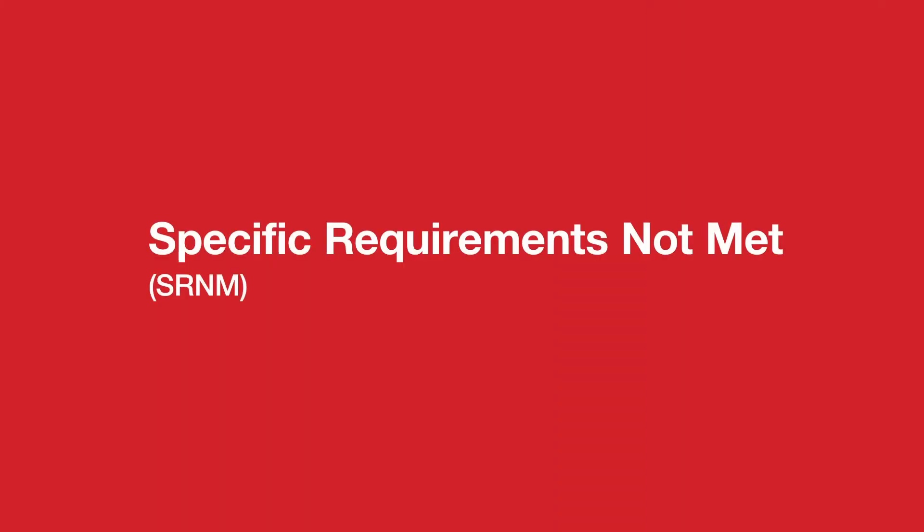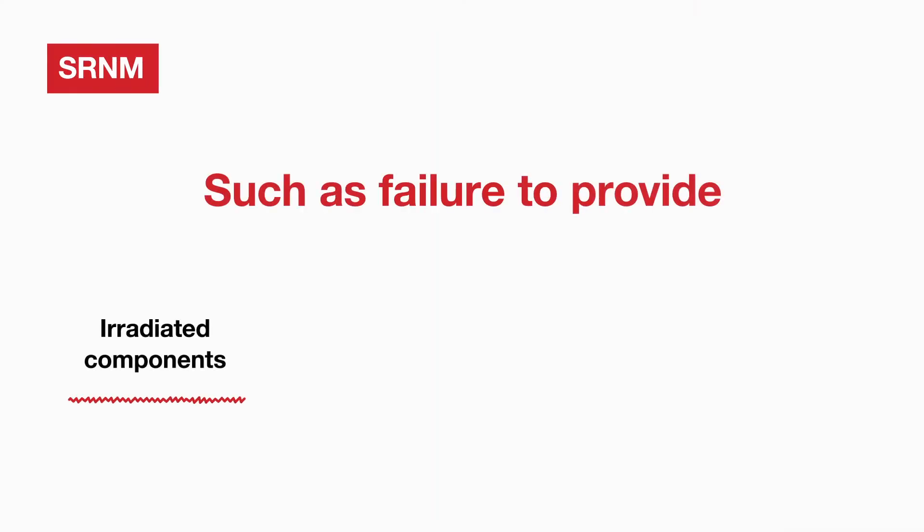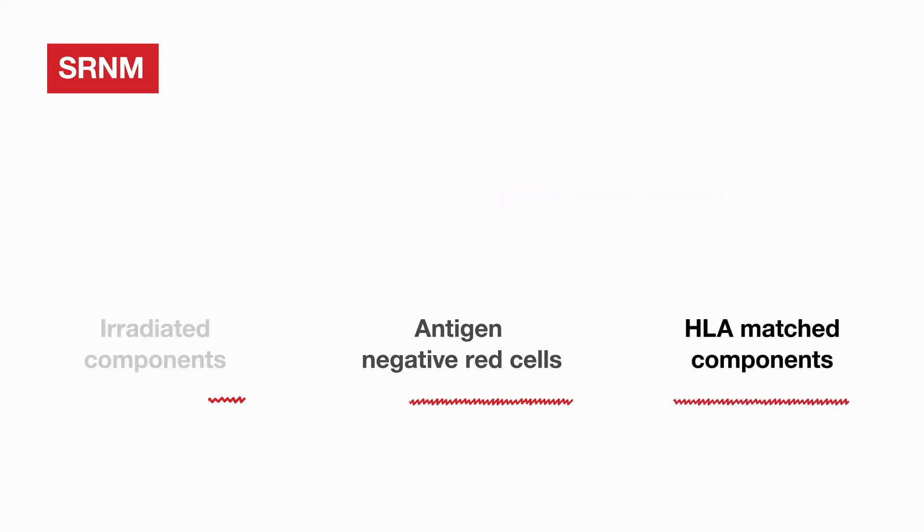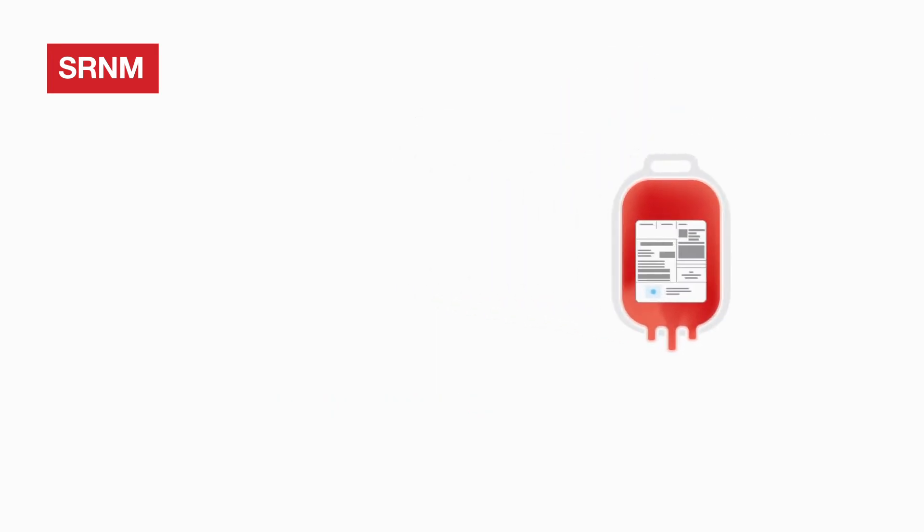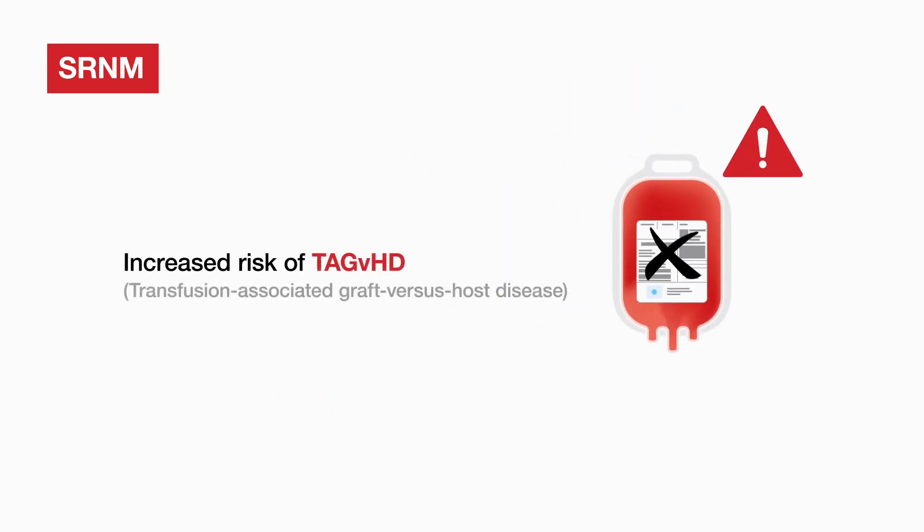Moving on to the category of specific requirements not met, this category includes all cases where specific requirements have been missed, such as non-irradiated component issued, antigen negative red cells for patients with known red cell antibodies have not been provided, or HLA matched components have not been provided where indicated. All HCT patients will require irradiated blood components prior to and following transplant, and failure to administer them can put the patient at increased risk of TAGVHD.